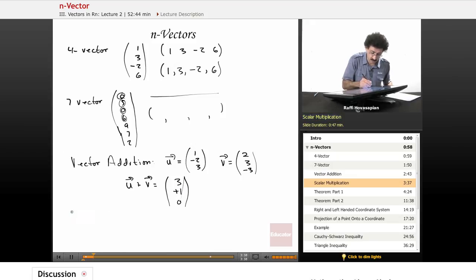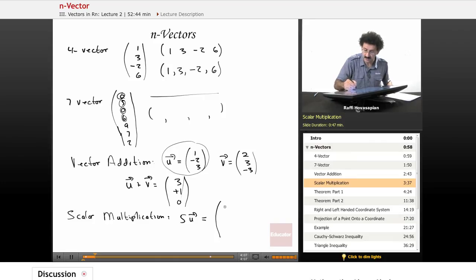If we do scalar multiplication, when we take a vector and we just multiply by a scalar, a regular number. So if I wanted to do, let's say, let's use U again. If I want to do five U, well, I just multiply everything in there by five. Five times one is five, five times negative two, negative ten, five times three is fifteen. So five U equals, and again, it's a three vector, nothing changes. We have five, negative ten, and fifteen.